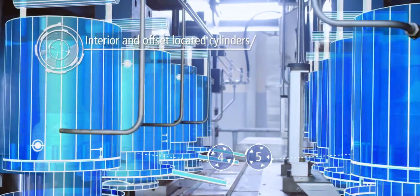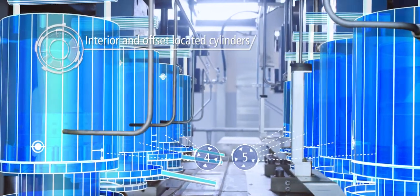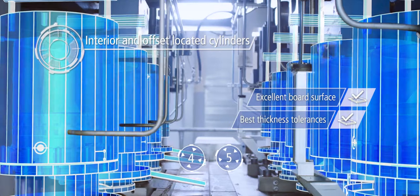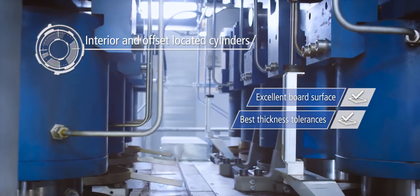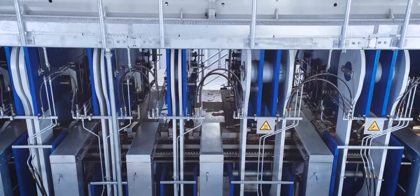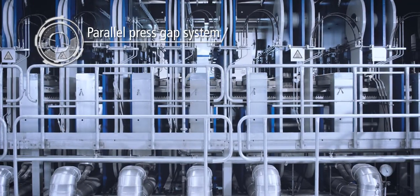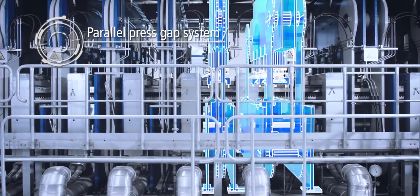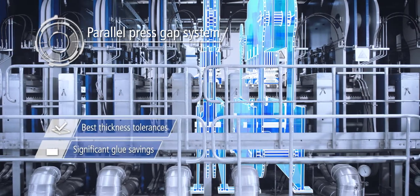Interior and offset-located cylinders ensure an ideal crosswise pressure distribution. The parallel press gap system makes possible an even and constant lengthwise pressure distribution.